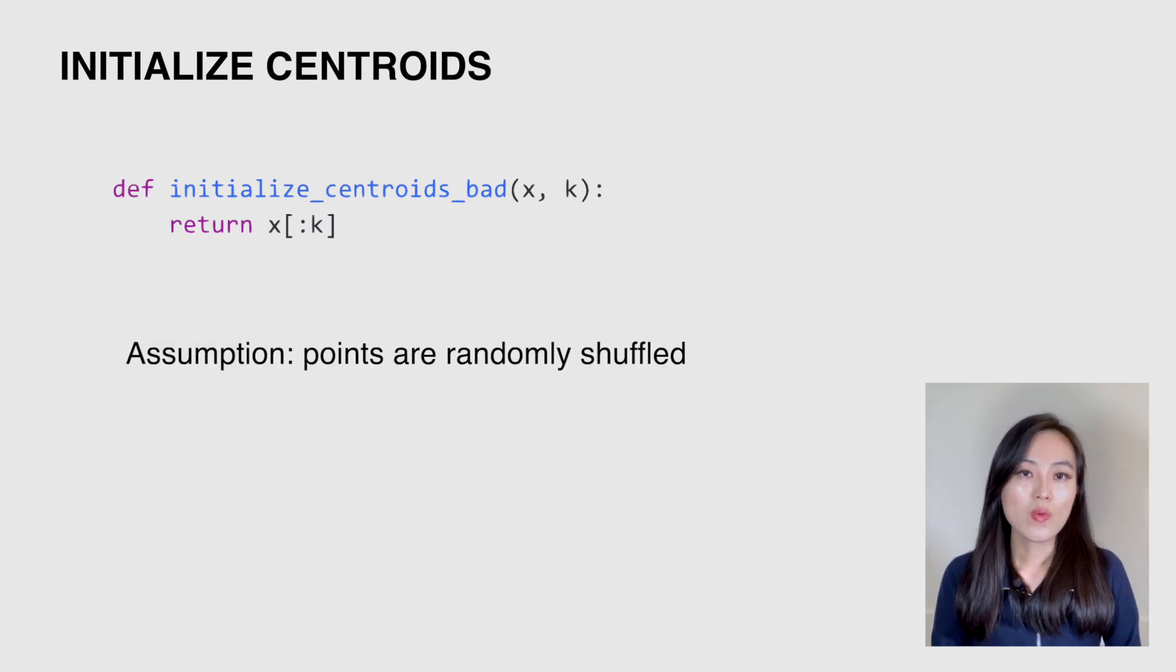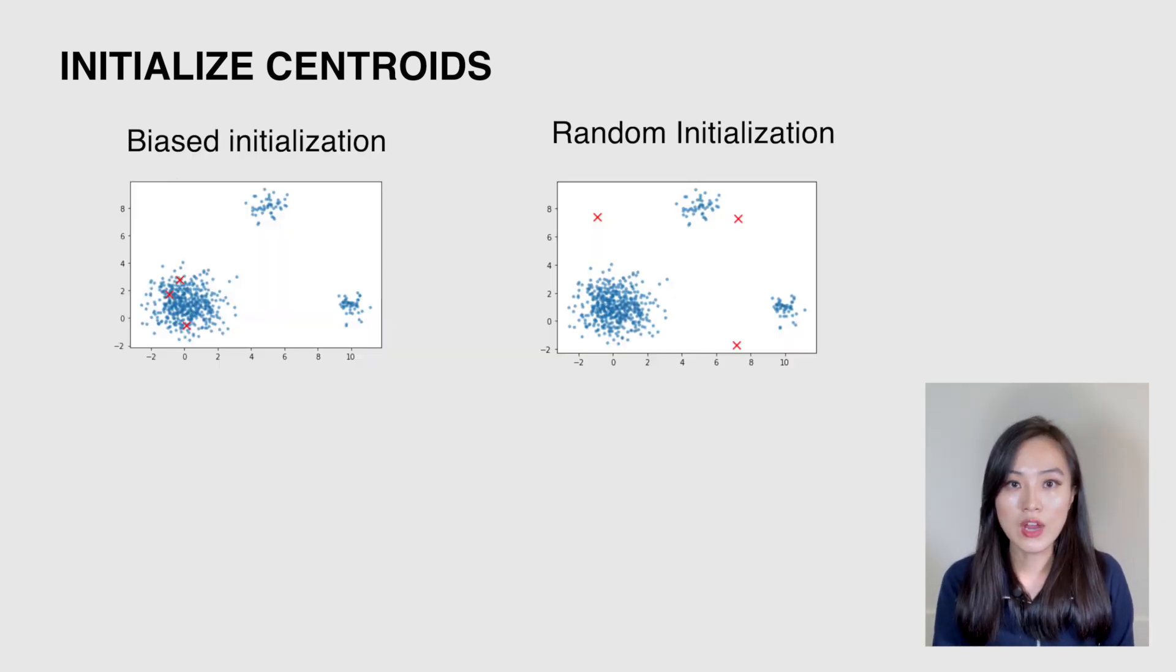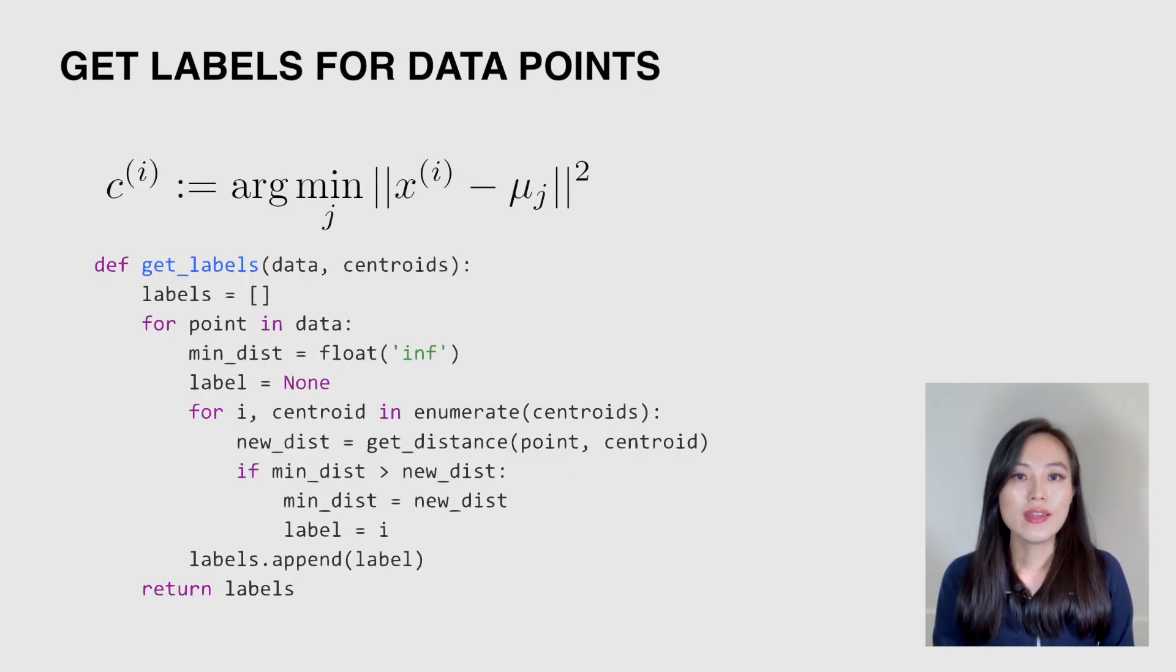One thing I want to highlight is that many people initialize the centroids by directly using the first k data points in the dataset, with the assumption that the points in the data are already randomly shuffled. It's a tempting idea because it's very simple to implement, but it can be wrong because it may introduce a bias to the initialization. Specifically, the centroids will have high chances being initialized to locations where the spatial densities are high, which may not be representative of a valid clustering of those data points. Let me give you an example. If we have points distributed like in this graph, using this approach very likely we will have centroids in those dense areas, and it will lead to less reasonable clustering compared with initializing centroids randomly.